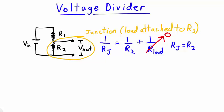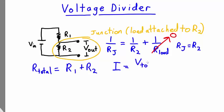Therefore, Rj equals R2. Since R1 and the junction are in series, the total resistance of the circuit is given by R1 plus R2. Then we can calculate the current through R1 and R2 using Ohm's law. The current equals Vin divided by the total resistance, which equals Vin divided by R1 plus R2.